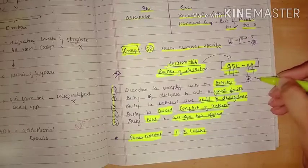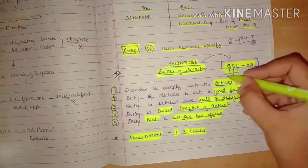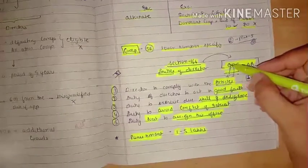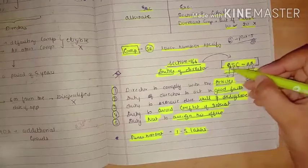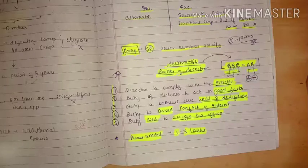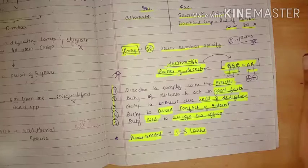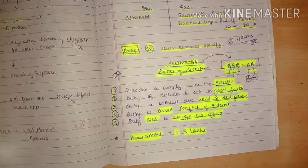So GSCAA: work in good faith, work with skills accordingly, but don't create conflict of interest, comply with articles, and don't assign the office. GSCAA, section 166 duties of director. I have tried to cover it in a short time.